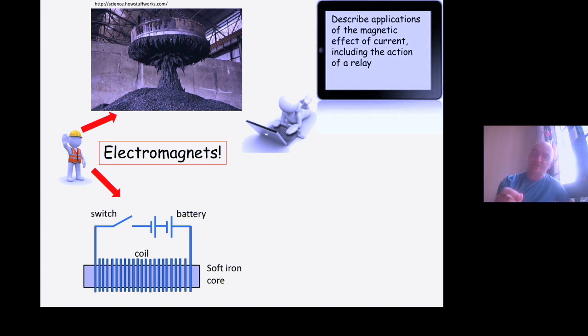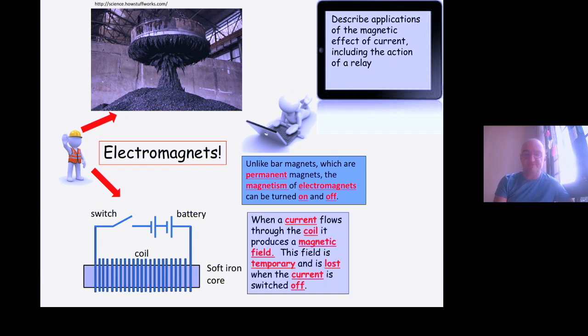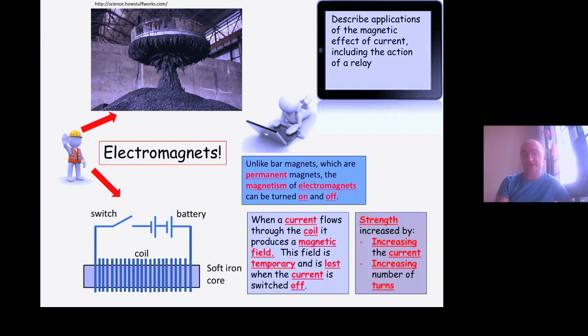Soft iron core, turn on the switch, the current flows, and we have a magnet. We can pick things up using it, and we can drop them again at the other side where we want them to be. When a current flows through the coil, it produces a magnetic field. It's temporary and is lost when the current is switched off. Two ways to increase the strength: we can increase the current flowing through the wire, or the number of turns in the wire around our soft iron core.